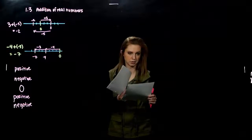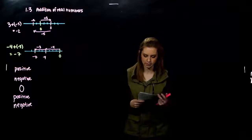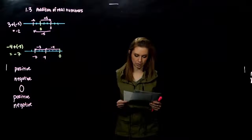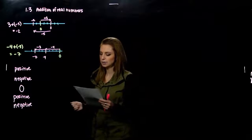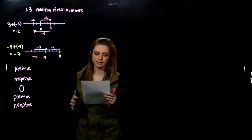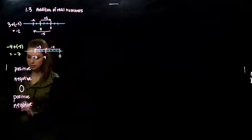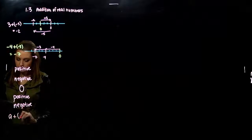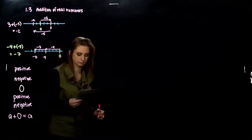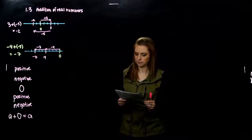If one of the numbers is zero, the sum is the other number — it makes sense. We can add zero to anything without changing it. That last rule is known as the additive identity property. It says that for any real number A, A plus zero — whatever number it is — if I add zero to it, I'm still going to get out A. We're going to use that in a little bit.